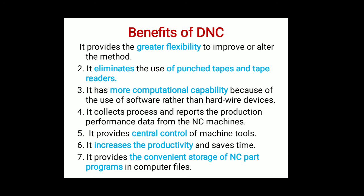Now we will see the benefits of direct numerical control machines. First, it provides greater flexibility — since we are using automated machines, we get more flexibility to change the program and change the management system, which automatically improves or alters the method. Second, it eliminates the use of the punch tape and tape reader. In the previous NC system, punch tape and tape readers were used as input devices, but in CNC/DNC we eliminate this and use computers and teleconvection lines to transfer the part program from the center computer to the machine tool.